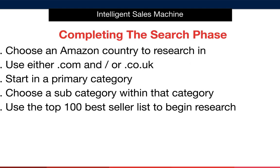Here's the process we're going to go through. First, we'll pick an Amazon country to research in. We recommend .com or .co.uk — the reason is the language barrier. It makes sense to research where it's simplest and fastest to complete this process. You'll be able to apply your BSR limits in each country, but we simply prefer these two markets. Secondly, we'll start in a primary category.